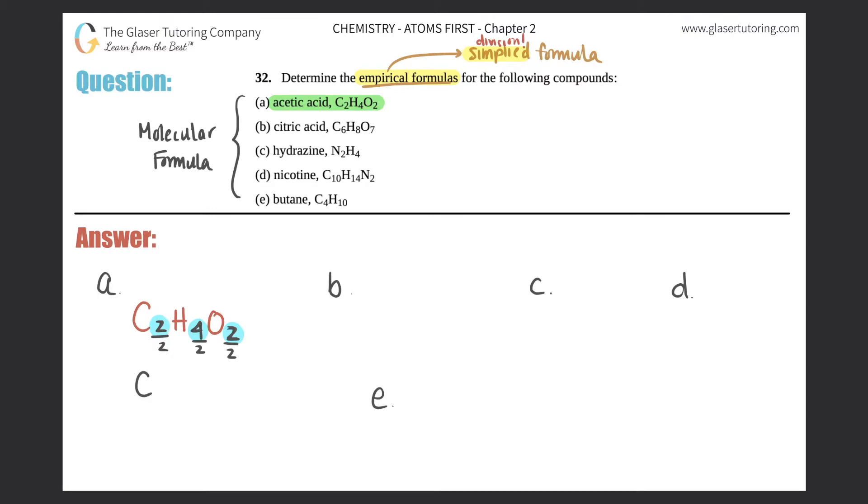If I divide each one by two, you would get a simpler whole number: C1 (but we don't write the one subscript, it's assumed), H2, and O. This would be your empirical formula for acetic acid, which is found in vinegar - fun fact.